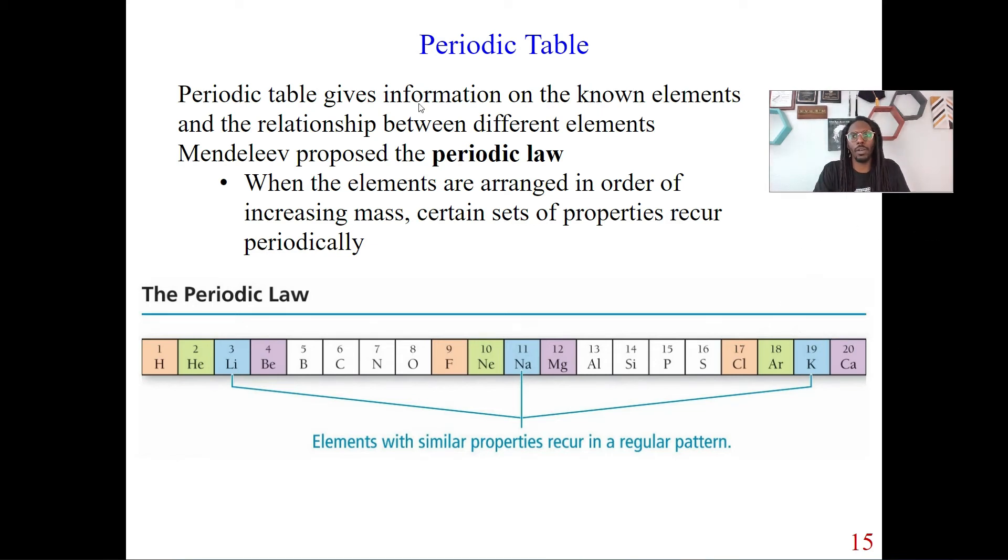So the periodic table can give you a lot of information. It's going to give you information about the elements, which we're about to go over here, but it's also going to give you information as far as how those elements are related to each other. So we can see a relationship between certain elements.